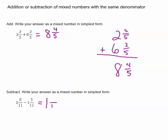Common denominator, we're going to keep the 11th and then subtracting the numerators, 6 minus 5 is 1. So our answer here is 1 and 1 11th.